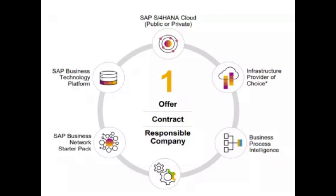Now let's talk about the components of RISE with SAP. It is a comprehensive offering that includes several components, each designed to help customers transform their business operations and move to the cloud. The first key component is SAP S/4HANA Cloud, which is SAP's flagship enterprise resource planning solution. It provides businesses with real-time data analytics and insights to help them make more informed decisions. The second component is SAP Business Technology Platform, which is a Platform as a Service, or PaaS.